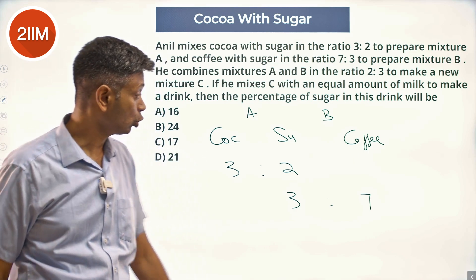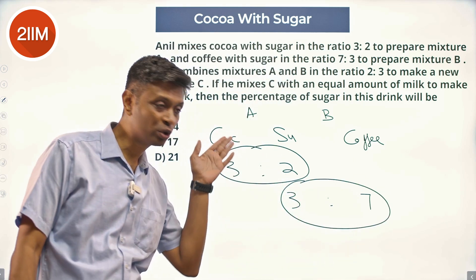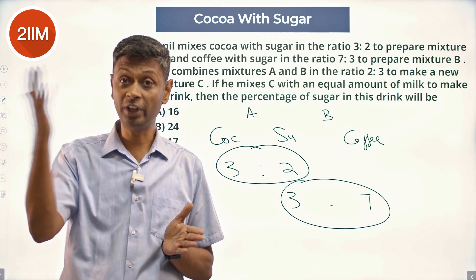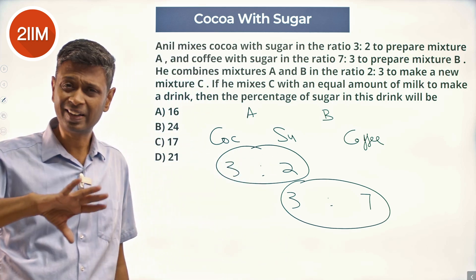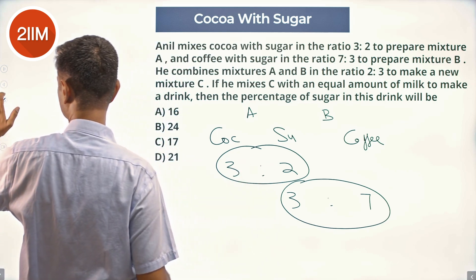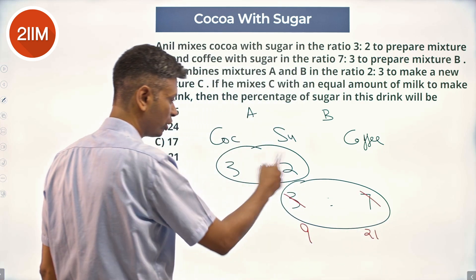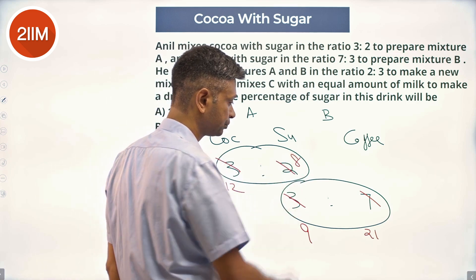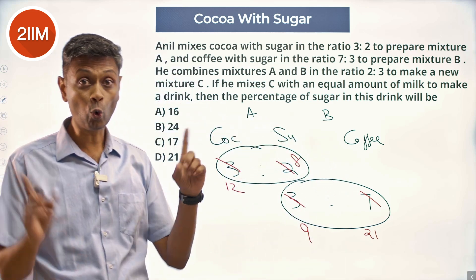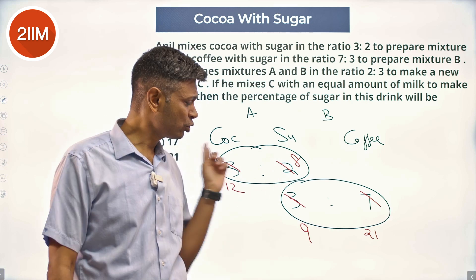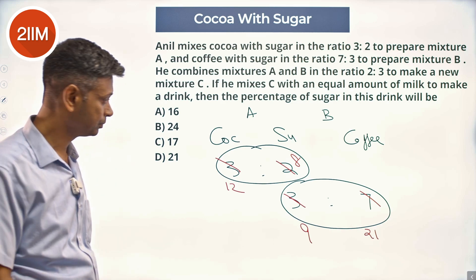He combines mixtures A and B in the ratio 2:3. The total number of units here is 5, total number of units here is 10. I need to make this a multiple of 3, that will go to 30, this should be 20. I'm going to translate 3:7 as 9:21 adding up to 30. This becomes 12:8, 12 plus 8 is 20, 9 plus 21 is 30. The 3:2 and 3:7 are maintained, mixed in the ratio 2:3 to make mixture C.